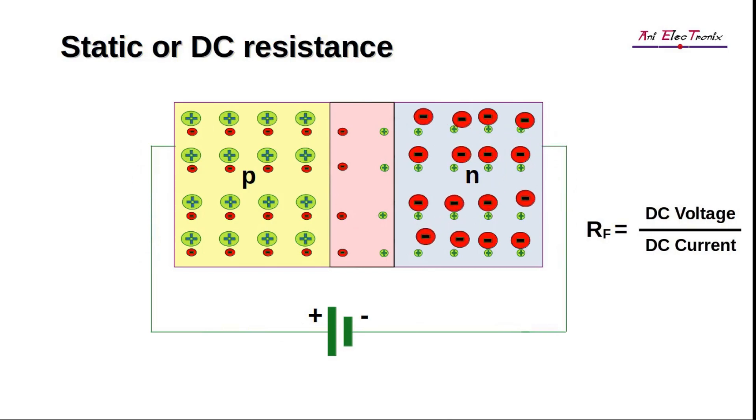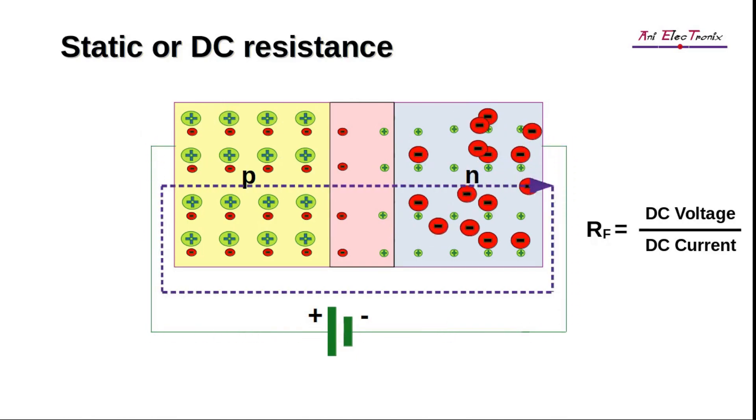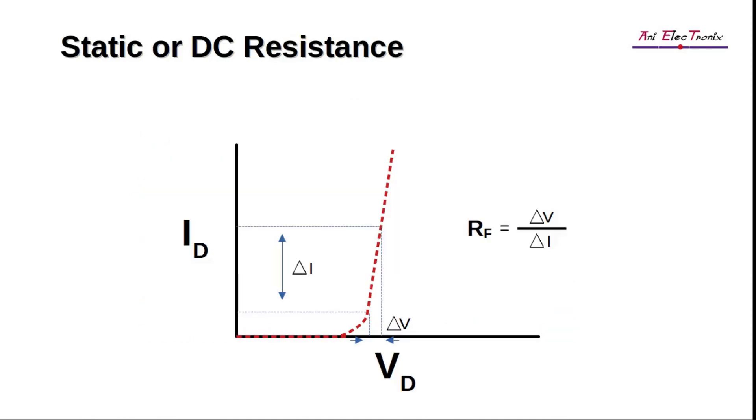RF, the static or DC resistance, is determined by the ratio of the forward DC voltage across the diode to the DC current flowing through it. From the forward characteristic curve, you can measure static resistance as follows.